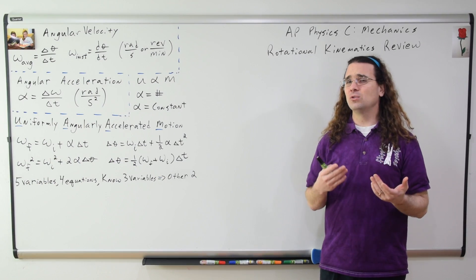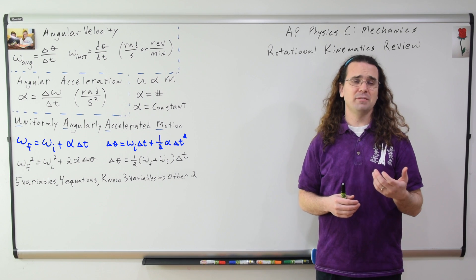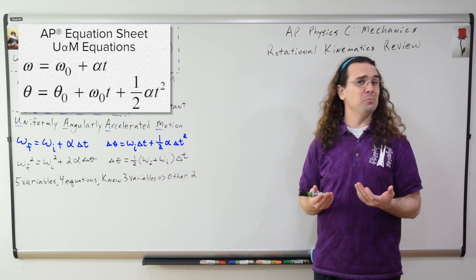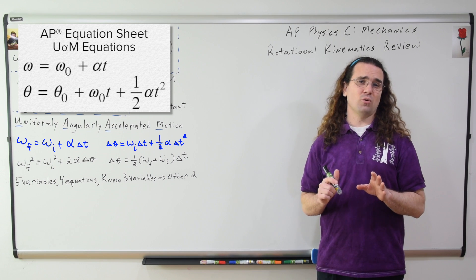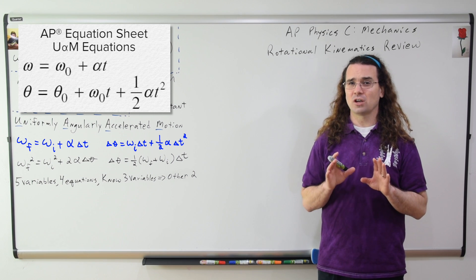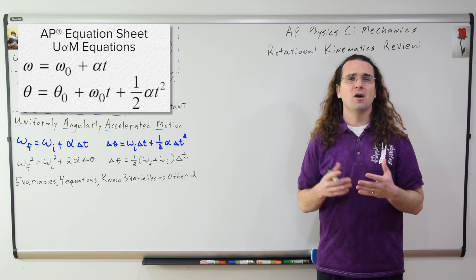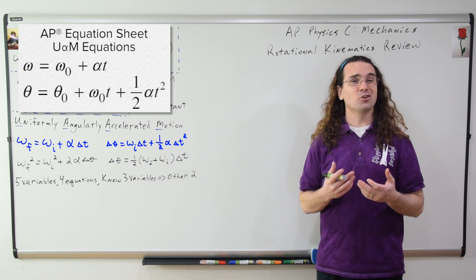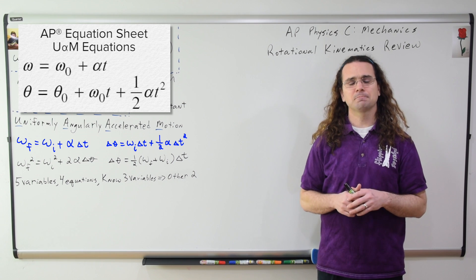I don't know why only the first two of the U fishy M equations appear on the AP equation sheet, and I know that those equations on the AP equation sheet look a little bit different than the ones I have listed here. But we already discussed those differences during the kinematics review, so I'm not going to do it again.